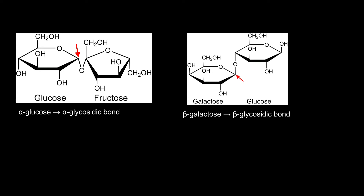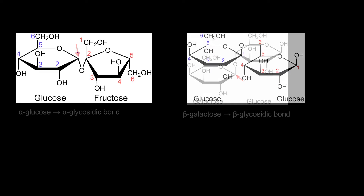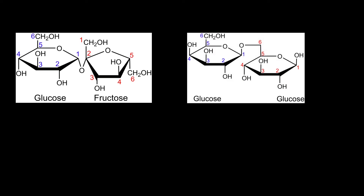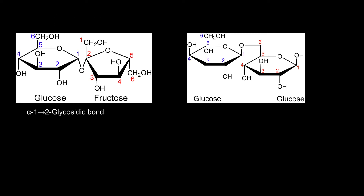In addition, the carbon atoms between which the bond is present are added to the name. For example, due to the hydroxy group at the anomeric carbon atom in sucrose being in the alpha position, it is called an alpha 1,2 glycosidic bond. While the hydroxy group at the anomeric carbon atom in gentiobiose is in the beta position, which gives a beta 1,6 glycosidic bond.